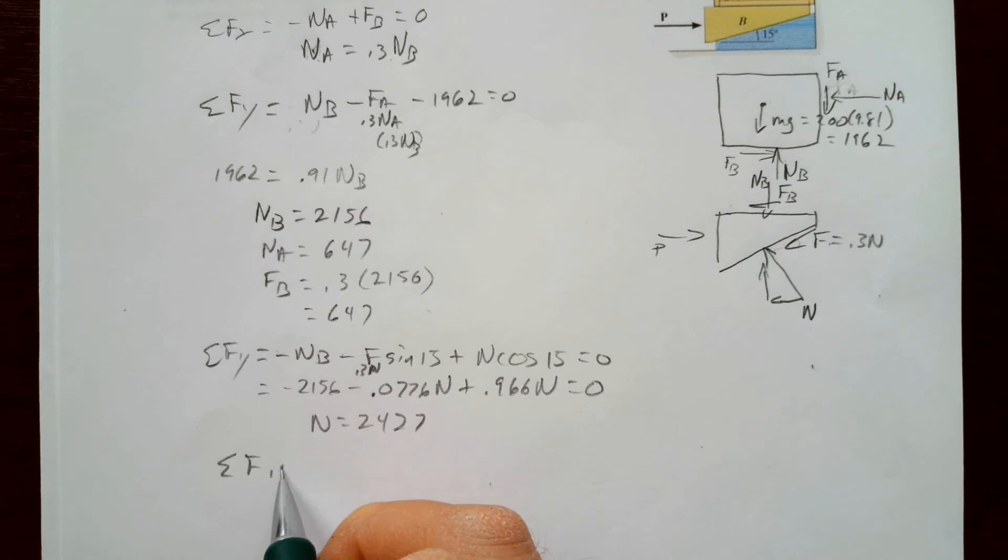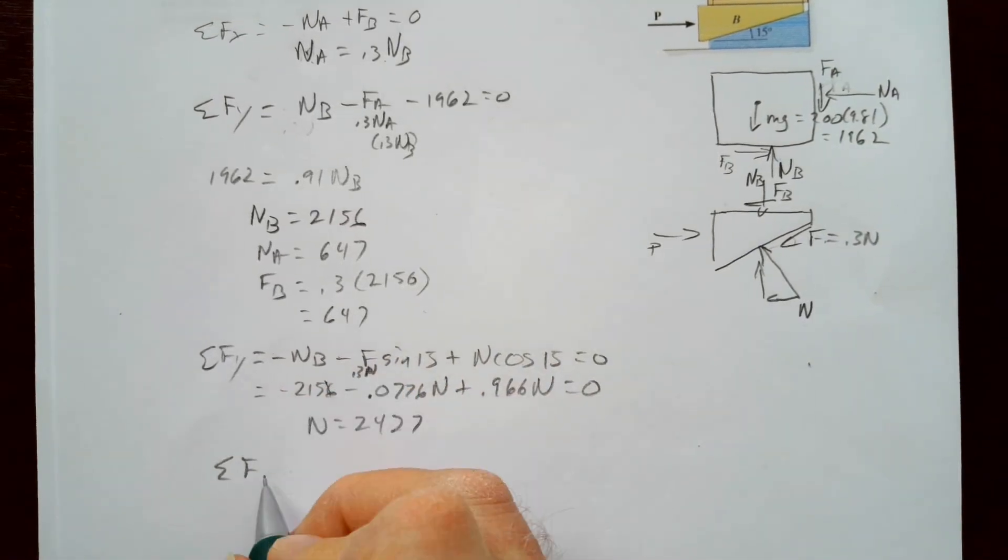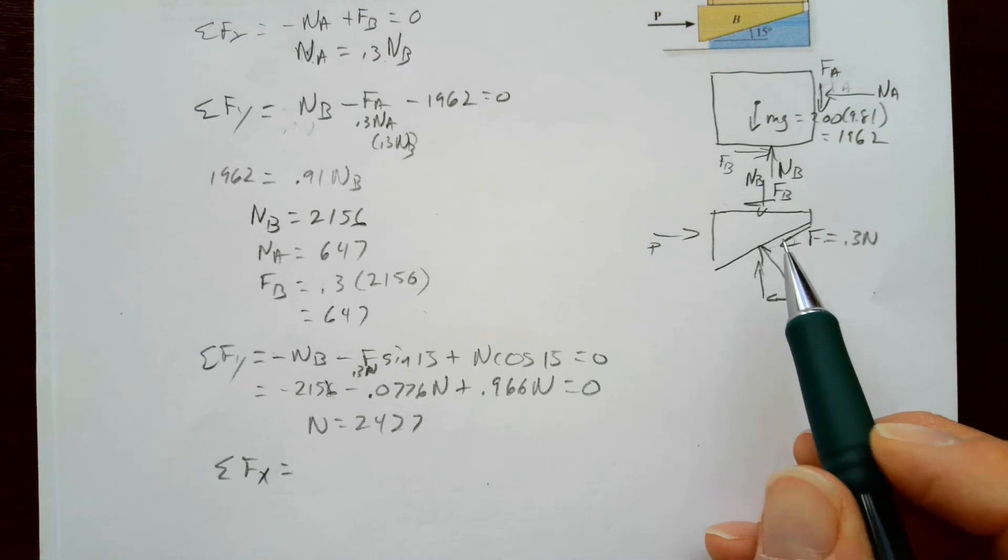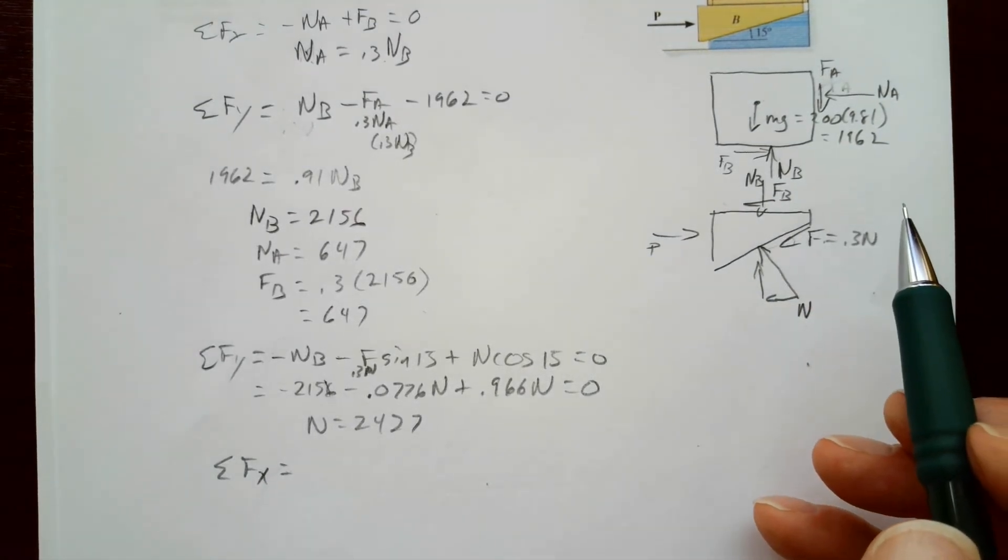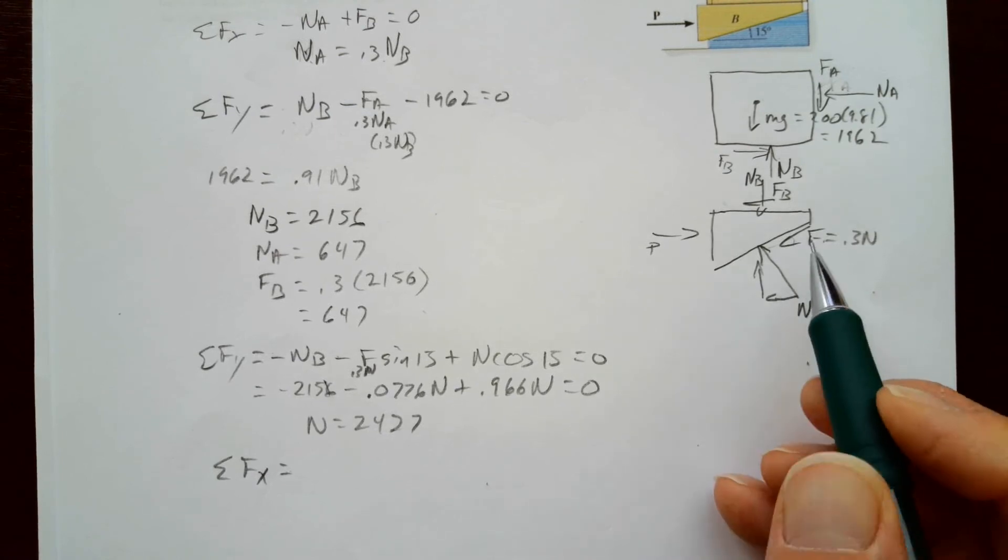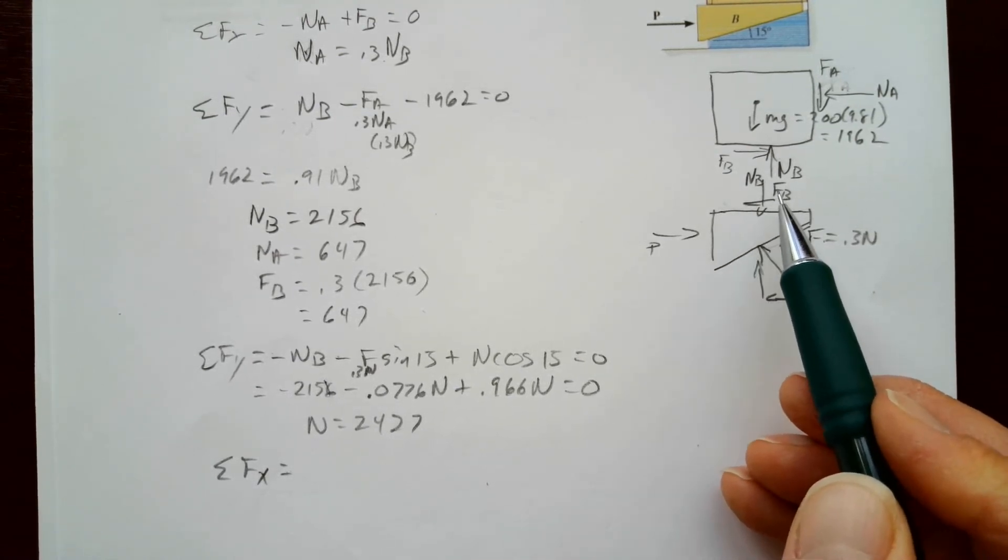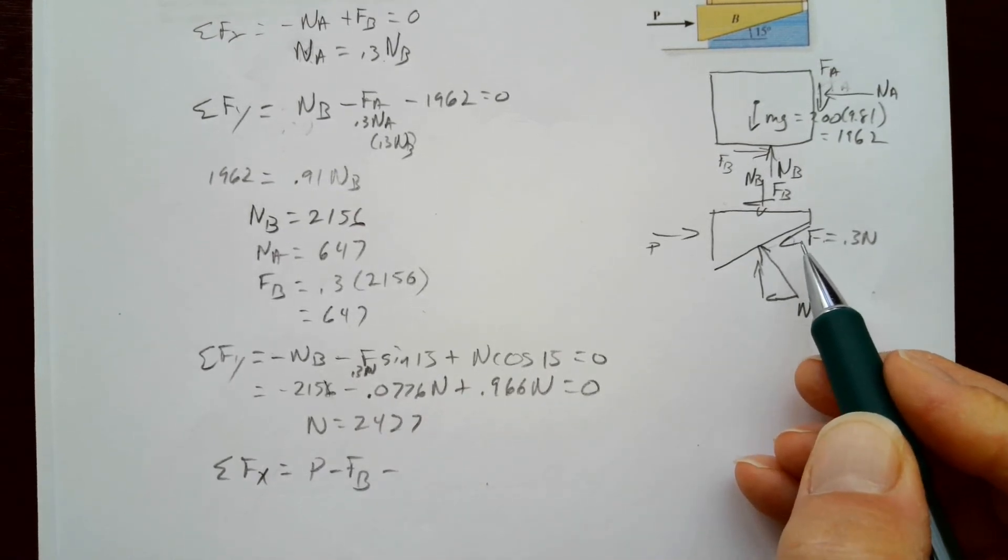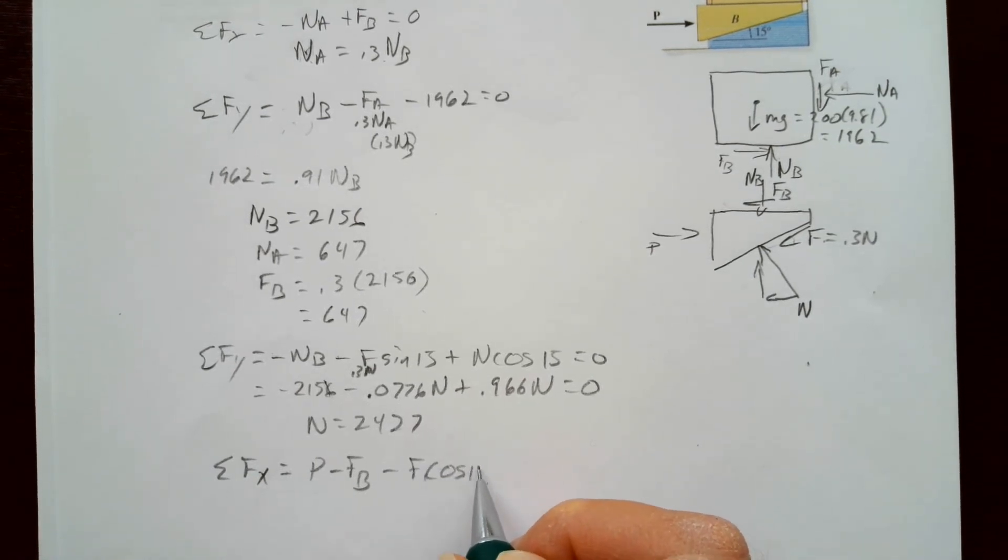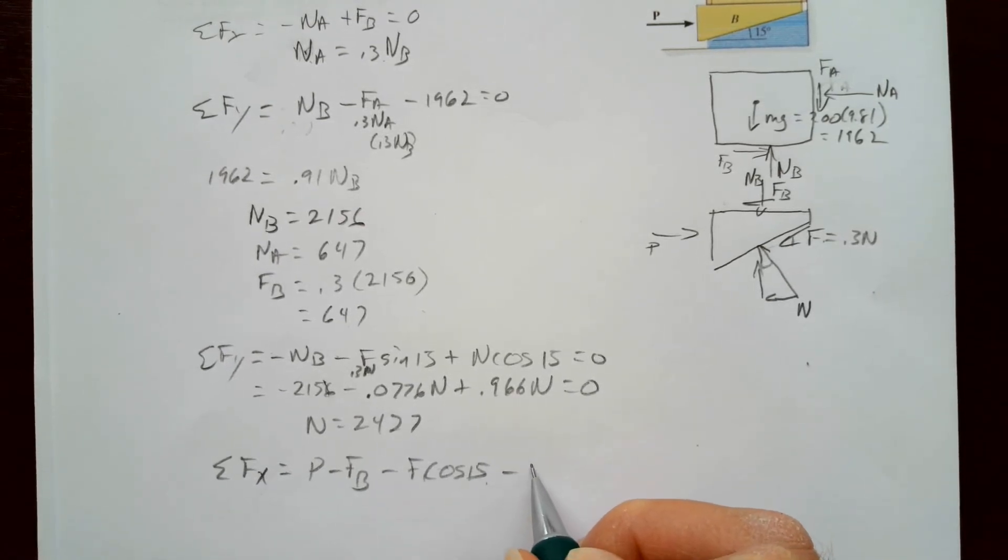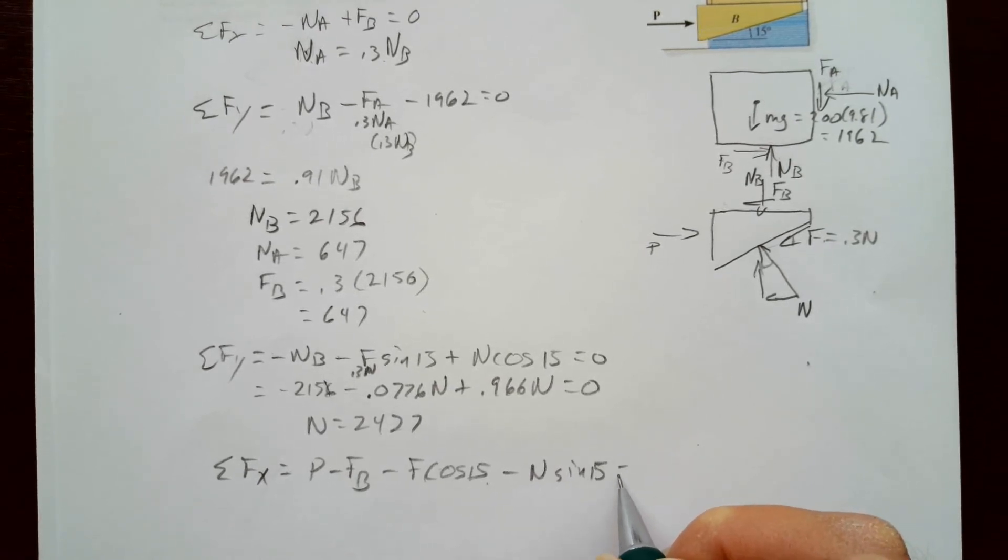Now sum the forces in the Y and the X. So in the X direction, we have N. Wait, I'm going to start with P. We're going to have P to the left and the right. We're going to have this part of N. We're going to have this part of F. And we're going to have FB. So P to the right minus FB minus F cosine 15. Because there's a 15 right there. And here's a 15. So then we have minus N sine 15. That all equals 0.